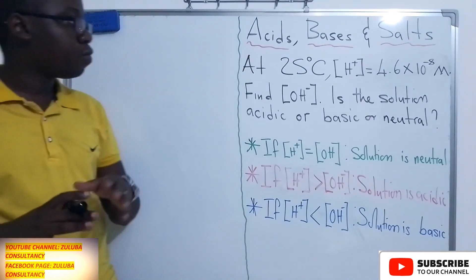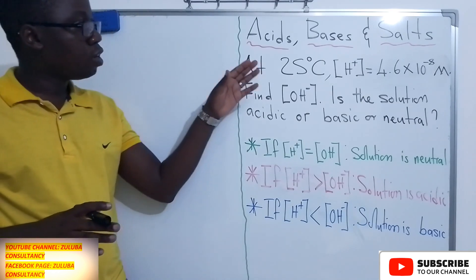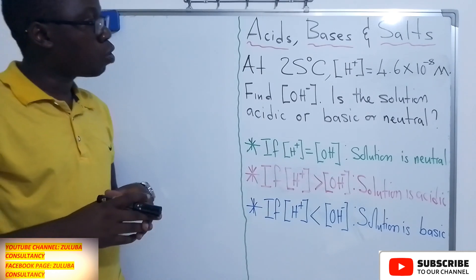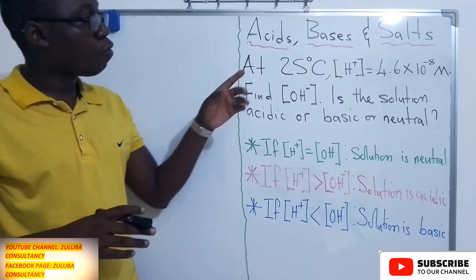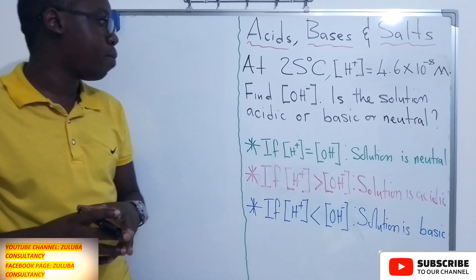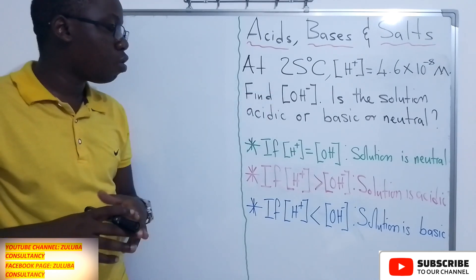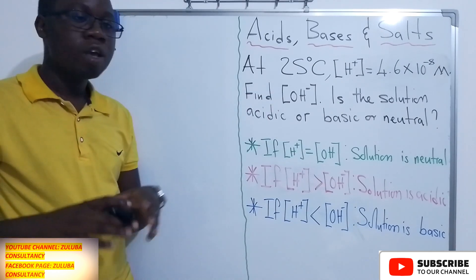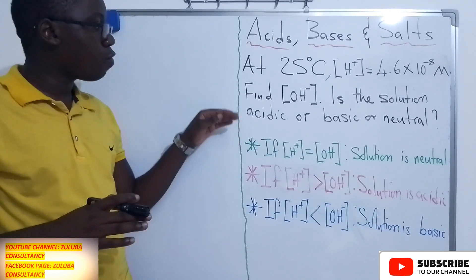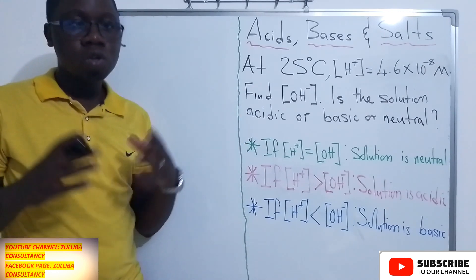The question reads: at 25 degrees Celsius, the concentration of H⁺ is 4.6 times 10 to the power negative 8 M. They are asking us to find the concentration of OH⁻, and then to determine if this solution is acidic, basic, or neutral.